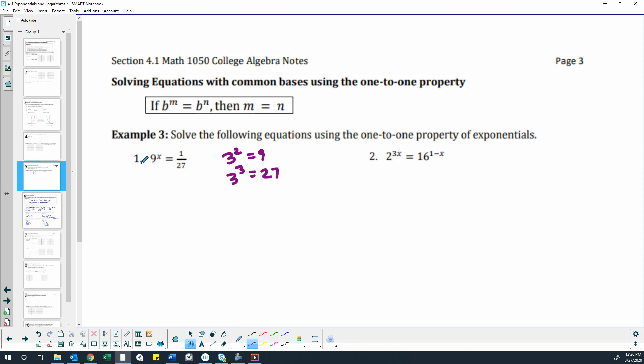So we can rewrite the left side as 3 squared, but it's 9 to the x power, so that's going to have to be 3 to the 2x power, because we changed the 9 to 3 to the 2.